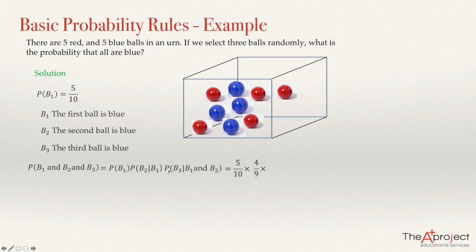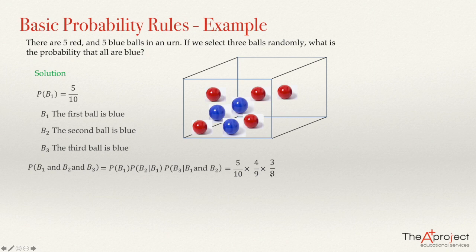For the third ball, the probability of B3 — that the third ball is blue given that the first two were blue — means we now have three blue balls out of eight remaining. So that probability is three out of eight. Multiplying all three terms together in the calculator, the answer is 0.0833, or 8.33%.